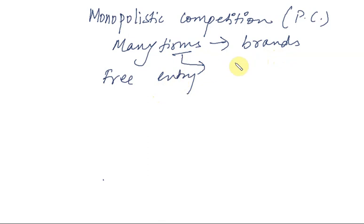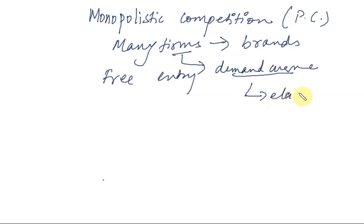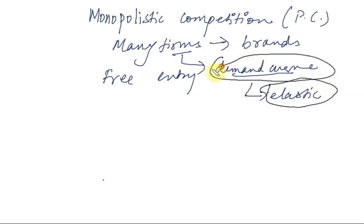Each firm has its own brand loyalty. For example, in toothpaste, Colgate may have more brand loyalty than Hindustan Lever. So each firm has its own individual demand curve based on its brand. This demand curve is quite elastic, because as soon as a firm raises its price too much, consumers shift from one product to another. So each firm has its own individual demand curve — not a market demand curve — like there will be an individual demand curve for Colgate and one for Pepsodent.